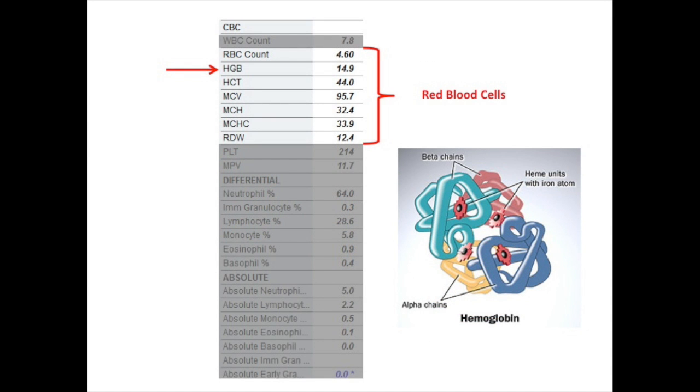Hemoglobin is the molecule within the red blood cells that carries oxygen. Iron is a very important component of hemoglobin.